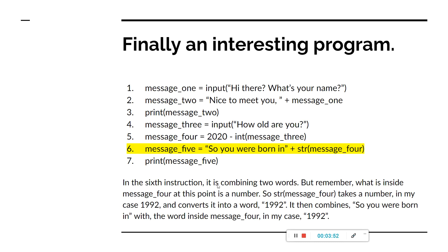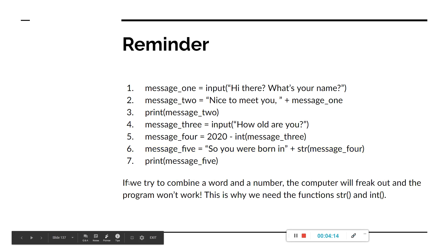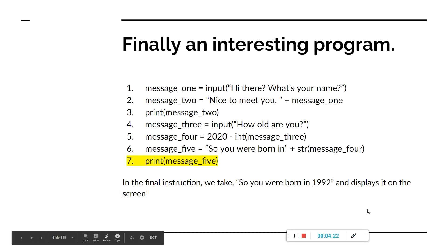In the sixth instruction it is combining two words, but remember what is inside message four at this point is a number. So 'str(message four)' takes the number — in my case 1992 — and converts it into a word. It then combines 'so you were born in' with the word inside message four, giving 'so you were born in 1992'. If we try to combine a word and a number the computer will freak out and the program won't work — this is why we need the functions 'str' and 'int'. In the final instruction, we display 'so you were born in 1992' on the screen.